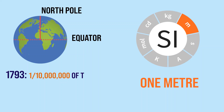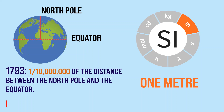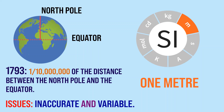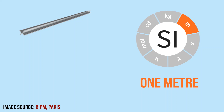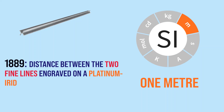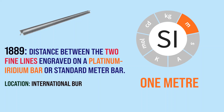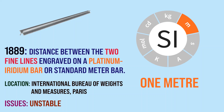This brings us to the next base quantity: length. Historically, one meter was defined as one ten-millionth of the distance from the North Pole to the equator, but such a distance cannot be accurately measured and also changes due to distortions in the shape of the Earth. Later, in 1889, length was defined as the distance between two fine lines engraved near the ends of a platinum-iridium bar — the standard meter bar — kept at the International Bureau of Weights and Measures near Paris. But physical representations can be unstable and change over time or in different environments.